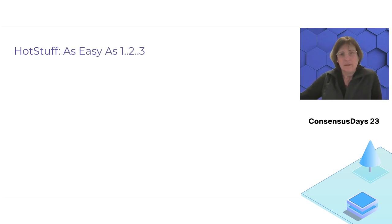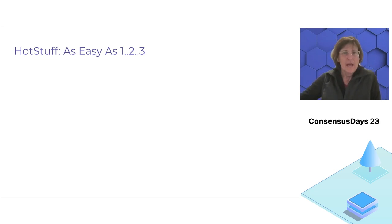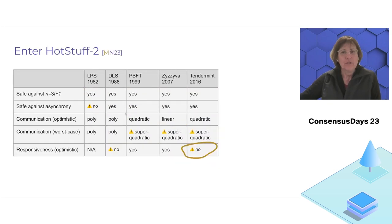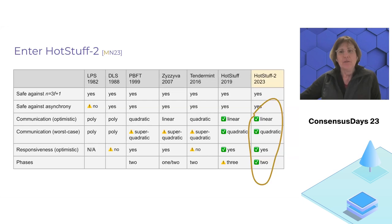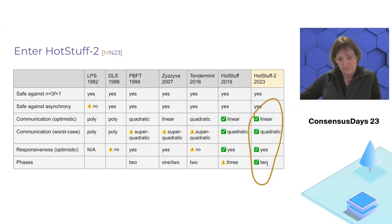I want to briefly comment on how we got here. Obviously I'm talking about Hot Stuff 2 because there was Hot Stuff. What Hot Stuff did was observe that the complexity of this view change could be solved with an extra step — instead of two phases, three phases. Going through a history of four decades very quickly: Hot Stuff introduced a protocol that had linearity, worst-case quadratic communication, and responsiveness, and it did that by introducing an extra phase, which Hot Stuff 2 now removes.